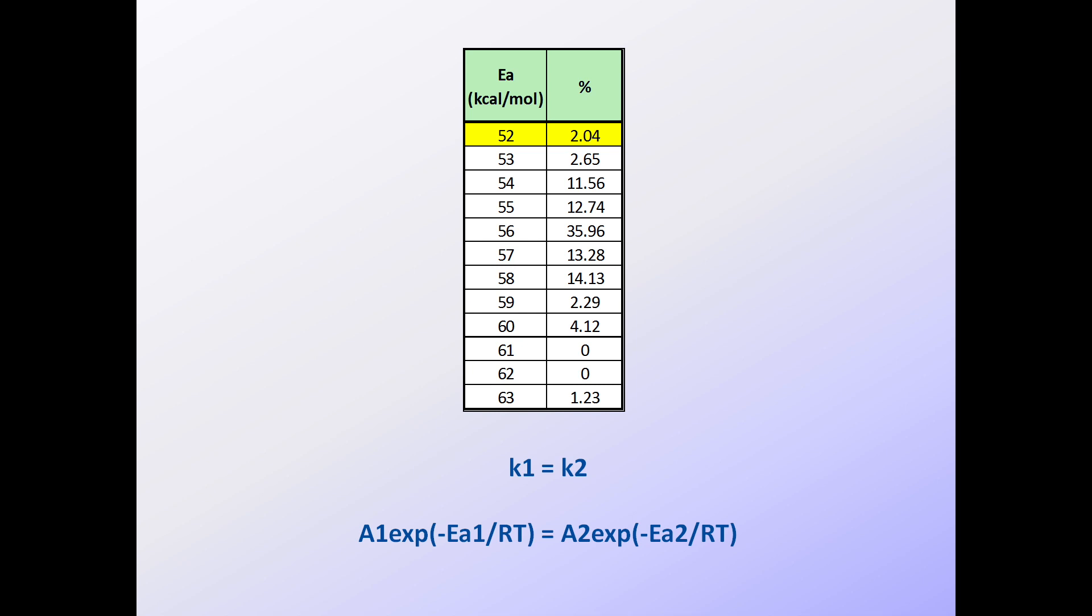The designations 1 and 2 also apply to the reaction rate constant and each activation energy. Here, let's just focus on the first Ea value in the original activation energy distribution, which in the table highlighted in yellow, is 52 kilocalories per mole. We'll call it Ea1.1.